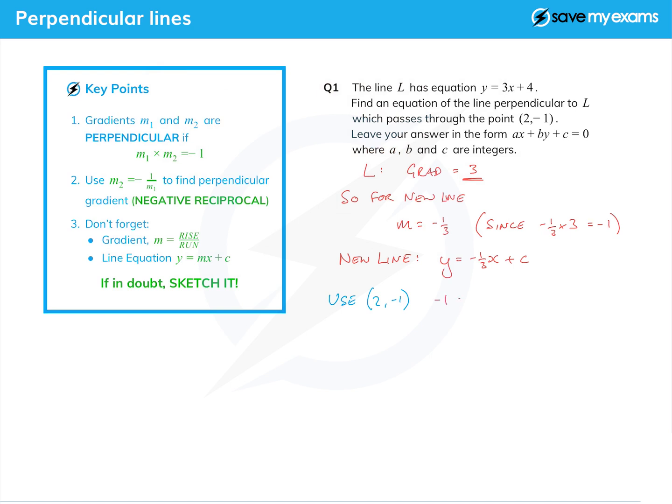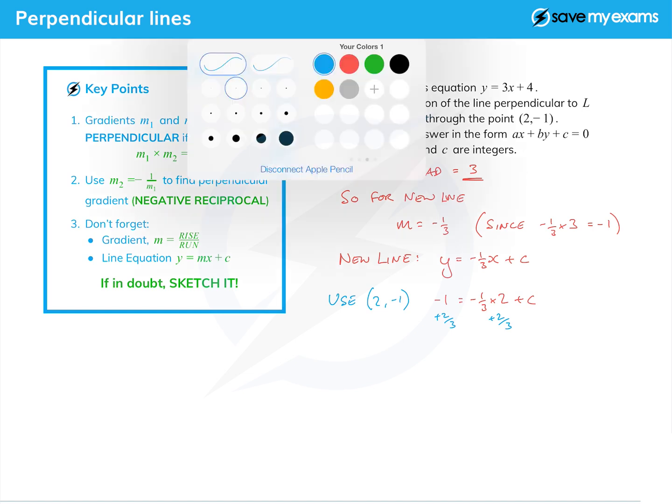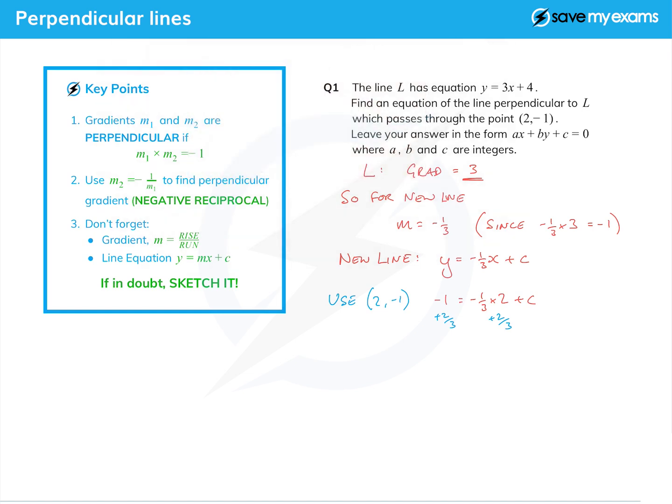We use (2, -1) which is of course an x value and a y value. So we put minus 1 in for y and then we put 2 in for x, and that allows us to find c. Minus a third times 2 is minus two thirds, so we add two thirds to both sides. Minus 1 plus two thirds is minus a third, so c equals minus a third.